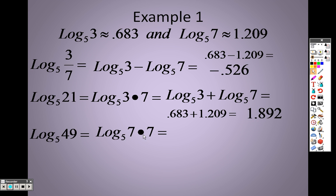And since it's multiplication, I can thus separate it with addition according to the rule that we just went over with the properties. I'd have log base 5 7 plus log base 5 7. And since each of those is 1.209, I'm basically saying 1.209 plus 1.209, which is 2.418.